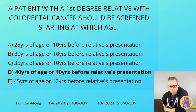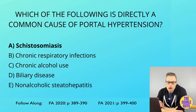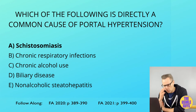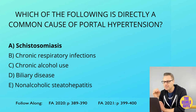Let's move on to the next question. The correct answer here is A. While many of the options are associated with cirrhosis — which is of course the most common cause of portal hypertension — option A, schistosomiasis, is the only option that is a direct cause of portal hypertension.